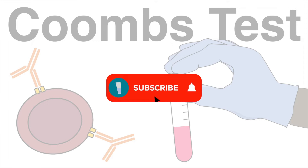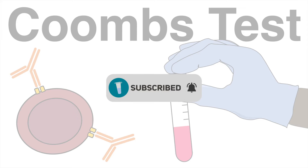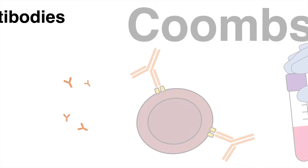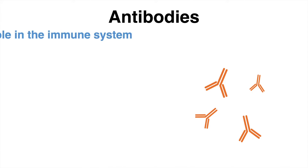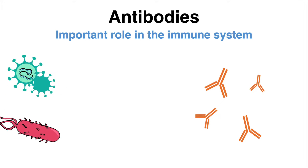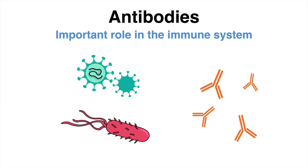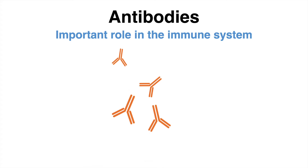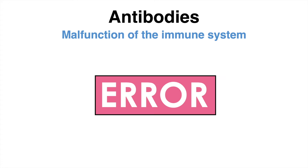Antibodies form an important pillar of the immune system by recognizing and eliminating invading pathogens. The immune system, however, can be error-prone if antibodies target and attack the body's own cells.